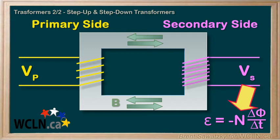So if we add more coils on the secondary side — that is, N gets bigger — then we create a bigger EMF, which means a larger output voltage. More coil loops on the secondary side gives us a step-up transformer: the voltage is stepped up or increased, and the current would therefore be decreased.